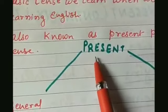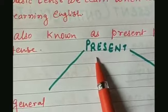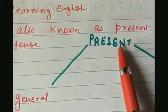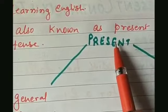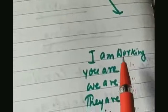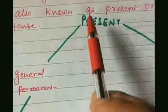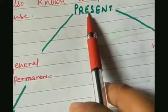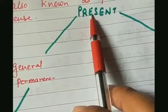The two basic tenses in the present are the present tense and the present continuous tense. Let's see which conditions each is used for.